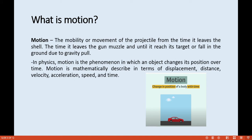Motion is the mobility or movement of the projectile — from the time it leaves the shell and the gun muzzle until it reaches its target or falls to the ground due to gravity. In physics, motion is the phenomenon in which an object changes its position from one place to another over time. Motion is mathematically described in terms of displacement, distance, velocity, acceleration, speed, and time — essentially a change in position of a body within a time period.